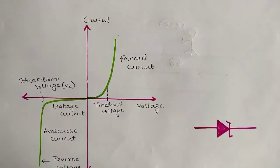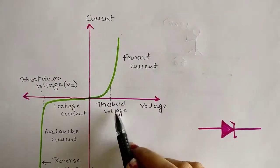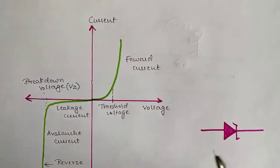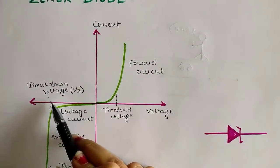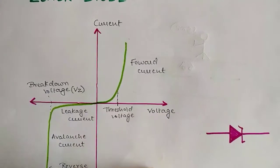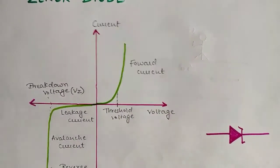A zener diode allows current to flow from its anode to its cathode like a normal semiconductor diode, but it also permits current to flow in the reverse direction when its zener voltage is reached. A zener diode is basically a diode which also allows current in the reverse direction. This graph depicts the transfer characteristics of a zener diode. In the forward bias, it acts as a normal diode where, once the threshold voltage is reached, current is conducted across the diode. It also conducts in reverse bias — when the breakdown voltage is reached, the current starts flowing and remains constant even though there are changes in the input voltage.